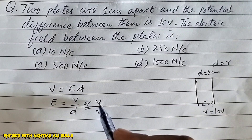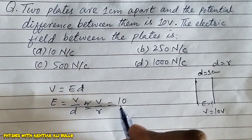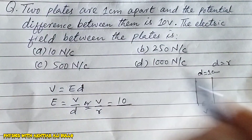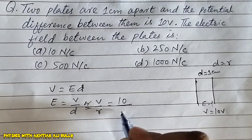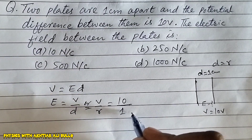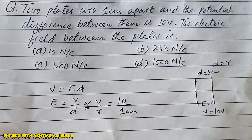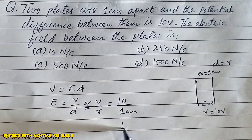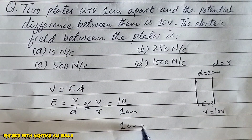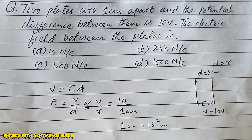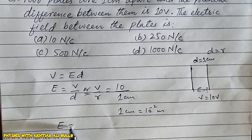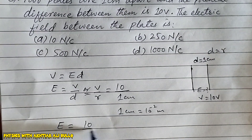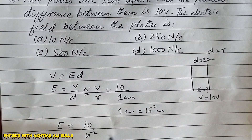The value of V is 10, divided by R, and R is one centimeter. As we know, one centimeter is equal to 10 raised to the power minus 2 meters. So E will be equal to 10 upon 10 raised to the power minus 2 meters.